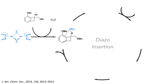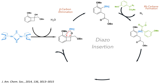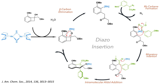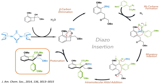Let's take a look at this diazo insertion reaction in detail. The catalyst first binds to the hydroxyl group on the molecule, tethering it in place and allowing it to undergo a beta-carbon elimination. This reaction breaks the strained cyclobutane carbon-carbon bond and leaves the rhodium bonded to the aromatic ring. This then forms a carbene by inserting into the diazo compound together with the elimination of nitrogen gas. With the two substrates now bound to the rhodium, a migratory insertion reaction occurs, coupling them together and forming a new carbon-carbon bond. An intramolecular aldol addition then occurs, forming the second carbon-carbon bond. Protonation then generates the product and leaves the rhodium catalyst free to react further.